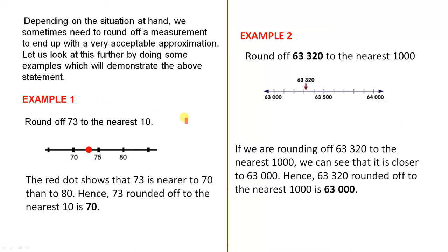Example 1, round off 73 to the nearest 10. The red dot shows that 73 is nearer to 70 than to 80, hence 73 rounded off to the nearest 10 is 70.